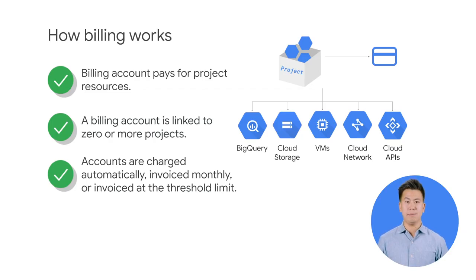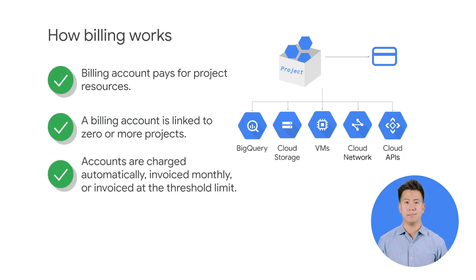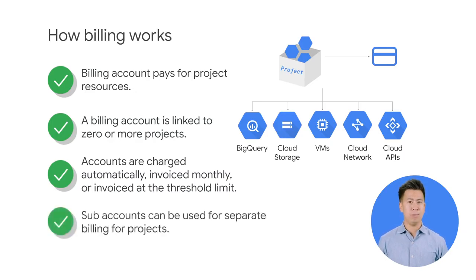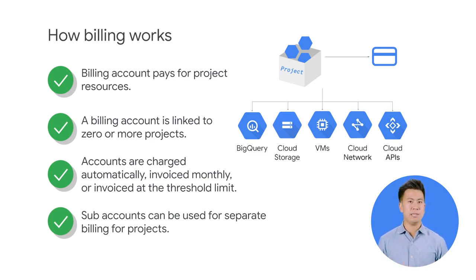Your billing account can be charged automatically and invoiced every month or at every threshold limit. You can separate project billings by setting up billing subaccounts. Some GCP customers who resell GCP services use subaccounts for each of their own clients.